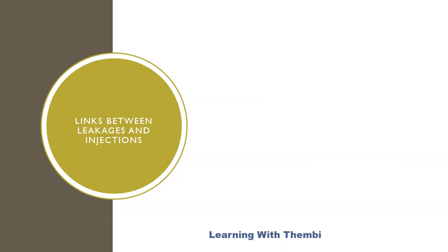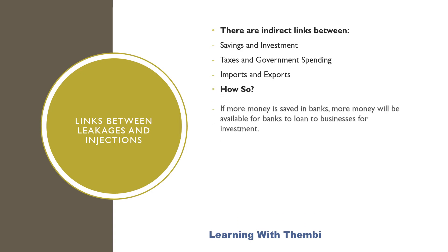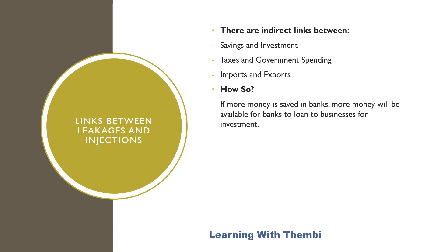So what kind of relationship do we have between leakages and injections? We say that we have indirect links between savings and investments, indirect links between taxes and government spending, and indirect links between imports and exports. When it comes to savings and investments, if more money is saved in banks, more money will be available for banks to loan to businesses for investment. However, the decision to save and to invest are taken by different groups, and the amounts may differ.